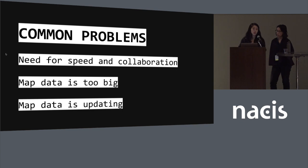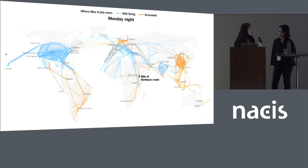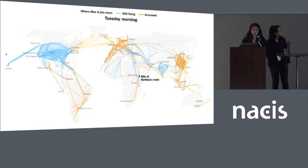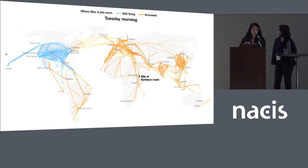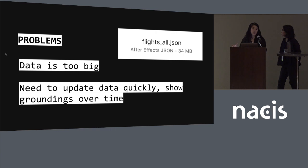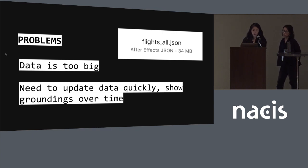We need ways to update maps without doing it manually every time. This is a story that Denise and I worked on when the Boeing MAX 8 jets were being grounded around the world following several crashes. We wanted to show all the routes where the MAX 8 flew and which countries were grounding the flights. The problem was that the data file — a GeoJSON with all the flights in the world over several days — was 34 megabytes.